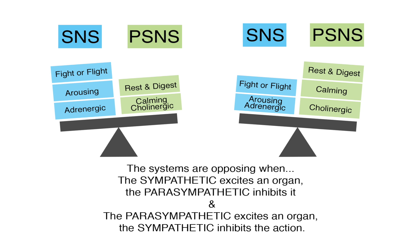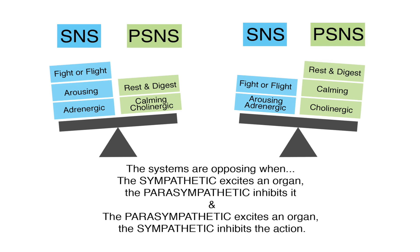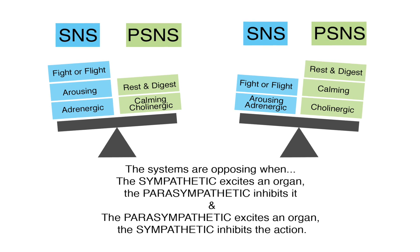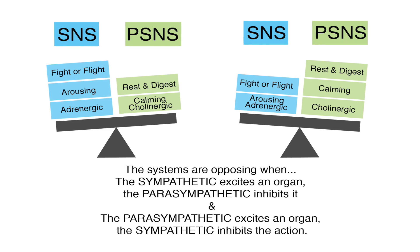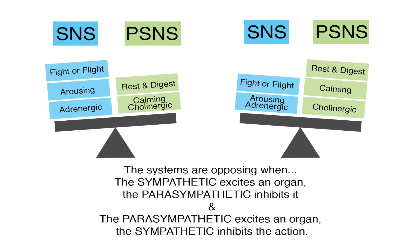The sympathetic, or SNS, and parasympathetic, or PSNS, are opposing systems. The SNS is the fight-or-flight response, also known as arousing or adrenergic. The PSNS is the rest and digest response, also known as calming or cholinergic.